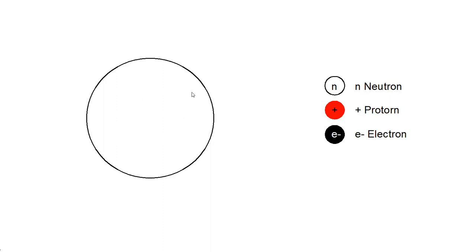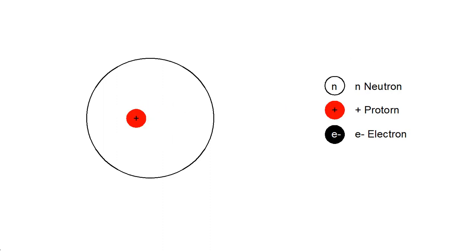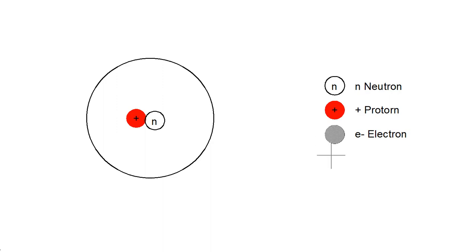Inside an atom, in the very middle, is the nucleus, and inside the nucleus we have protons and neutrons. Let me put one proton and one neutron in the nucleus of this atom, and then in the outer shell I'm going to place an electron. This is the very first shell — in the middle we have the nucleus with a proton carrying a positive charge, a neutron carrying no charge, and an electron out in the first shell.